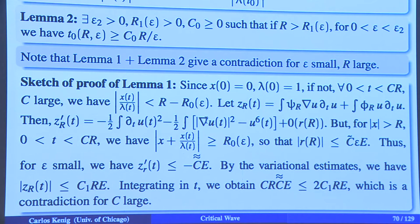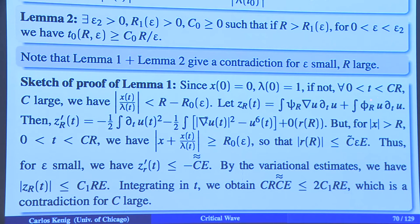Of these two lemmas, the first is a little bit easier than the second, but neither is terribly hard provided you know how to combine these virial identities. So let's do the first one. We assume that it is not true — so up to c times r, I never reach the value r minus r-naught of epsilon — and we will see that that's impossible.